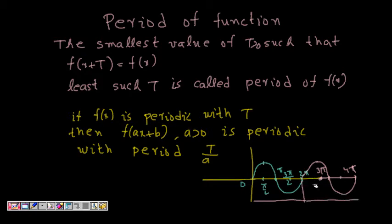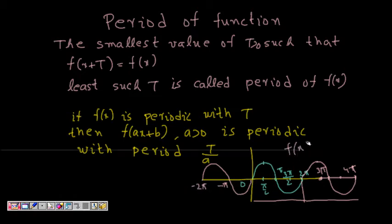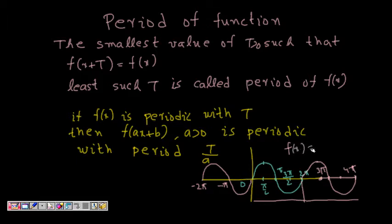Similarly, on the negative side at −π and −2π it is the same. So we see that f(x) = f(x + 2π), and hence sine x is periodic with period 2π.